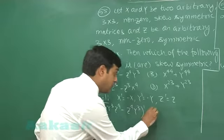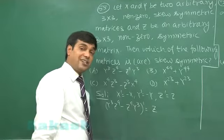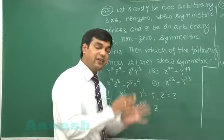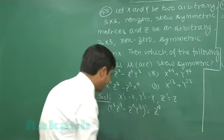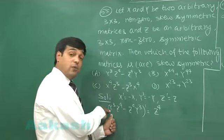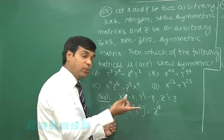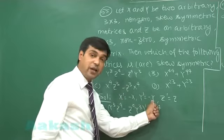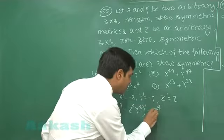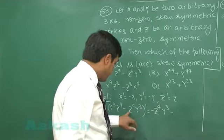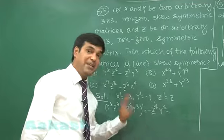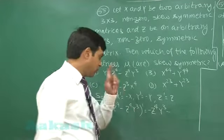So it is Z⁴ transpose. When we talk about Z⁴ transpose, we can say (Z transpose)⁴. Z transpose means Z, so it is simply Z⁴. Y transpose whole cube, Y transpose is minus Y raised to the power 3, so it is minus Y³.